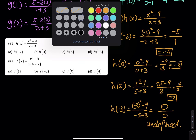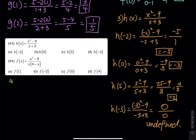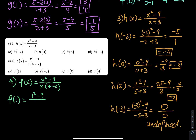Let's do number 4. We have f of x equals x squared minus 9 divided by x times 4 minus x. For f of 1: that is 1 squared minus 9 over 1 times 4 minus 1. 1 minus 9 is negative 8, and 1 times 3 is 3. So negative 8 over 3 is my answer.